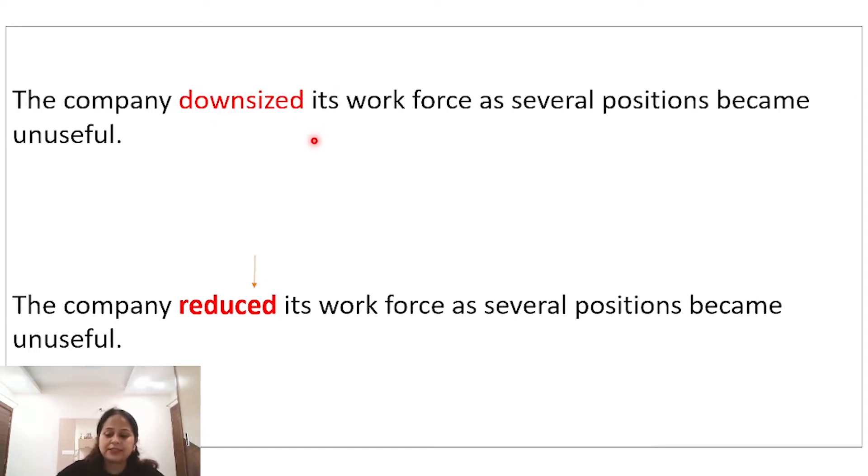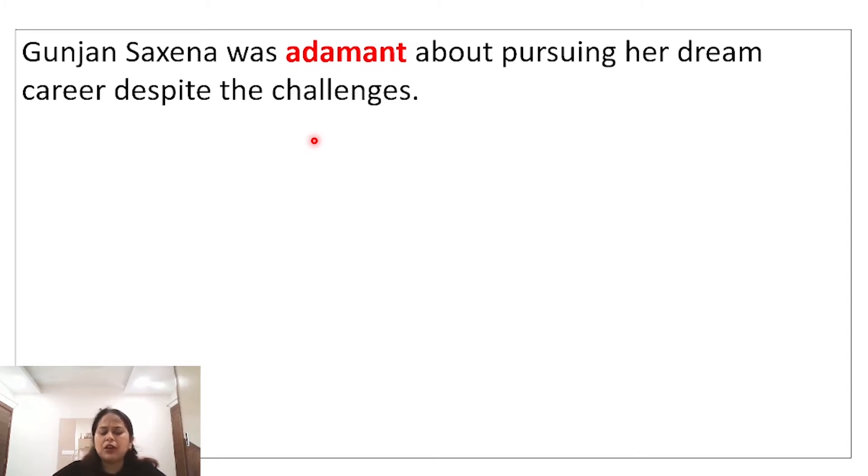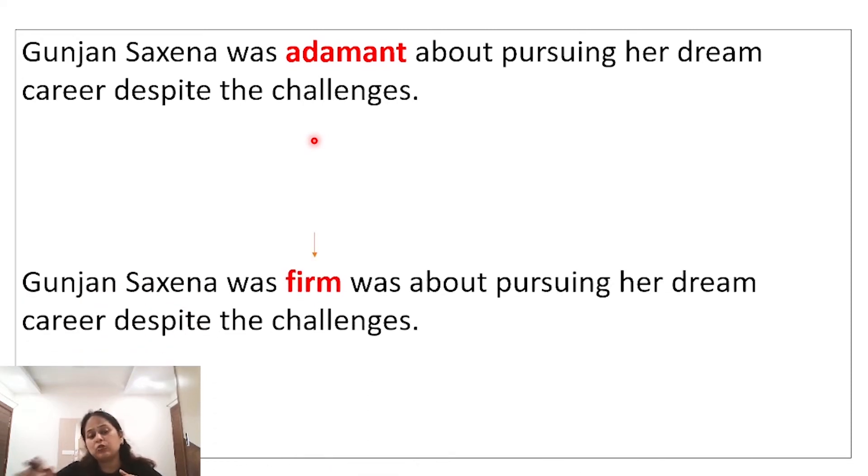Gunjan Saxena was adamant about pursuing her dream career despite the challenges. Adamant ka matlab hota hai apne soch par firm rehna, strict rehna ki ye mujhe karke hi rehna hai. Firm. Gunjan Saxena ki parva aap sabko pata hai ki unhone soch liya tha apne dreams achieve karenge chahe kitne bhi challenges ho. Adamant ka matlab hota hai firm.